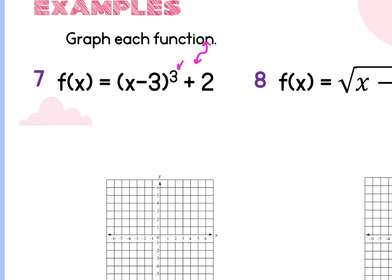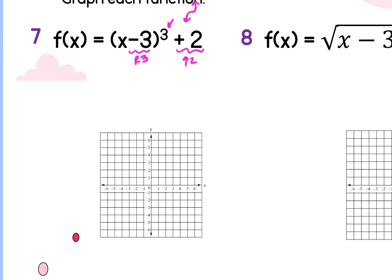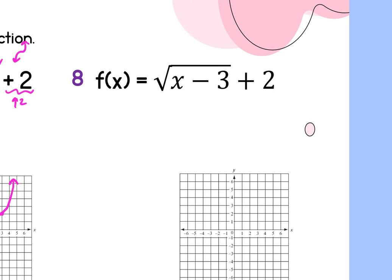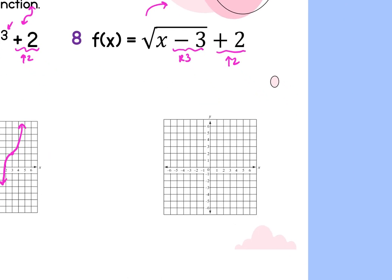Example 7: cube root of x minus 3, plus 2. The cubic parent goes up to the right and down to the left. The minus 3 inside causes a shift right 3; the plus 2 outside causes a shift up 2. Plot the point at 3, 2 and draw the cubic function through it. Example 8: square root of x minus 3, plus 2. The parent function is that half-parabola arc. Minus 3 inside means right 3, plus 2 outside means up 2. Go right 3, up 2, and point the curve to the right.